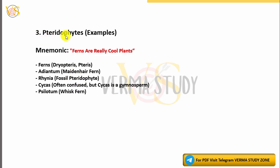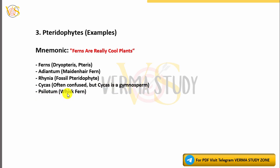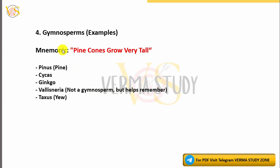3. Pteridophytes Examples Mnemonic: 'Ferns Are Really Cool Plants.' Examples include Dryopteris, Pteris, Adiantum (Maidenhair Fern), Ranikhet, and Psilotum (Whisk Fern). Note: Cycas is often confused as a pteridophyte but is actually a gymnosperm.